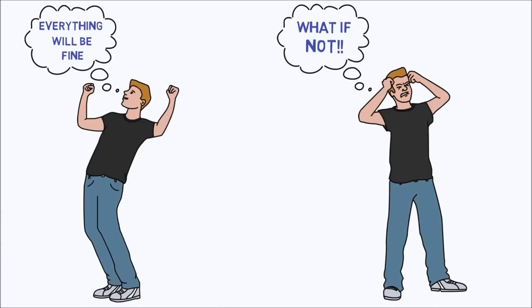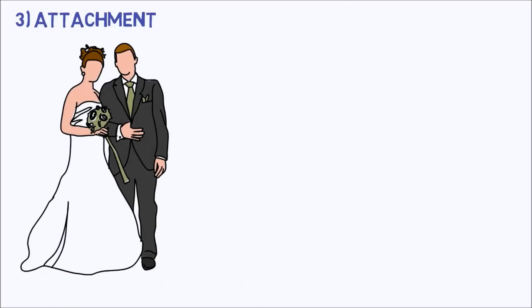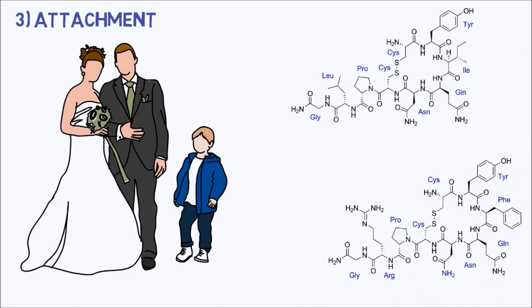Moving to the third and last stage, attachment. Attachment is the bond that keeps couples together long enough for them to have and raise children. Scientists think there might be two major hormones involved in this feeling of attachment.